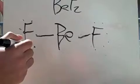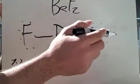Two, four, six, eight, ten, twelve, fourteen, sixteen. So we know that this is the right structure for BeF2.